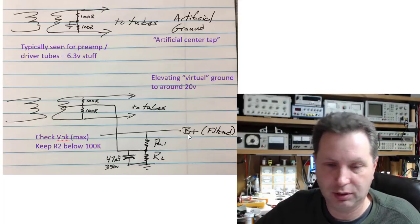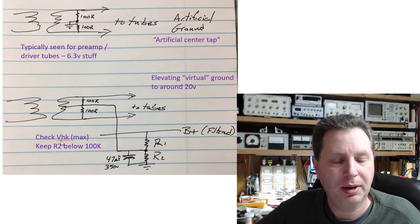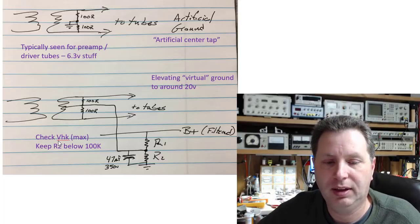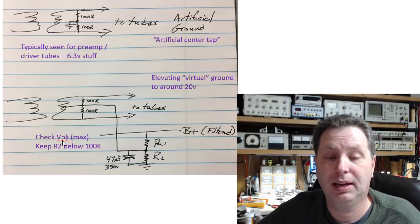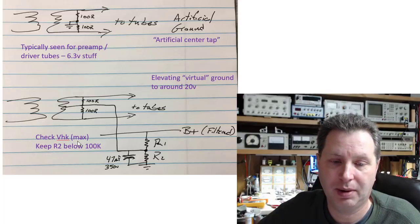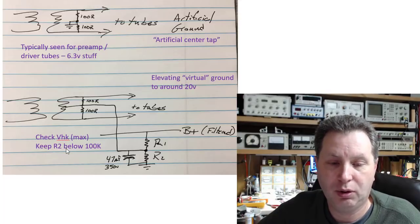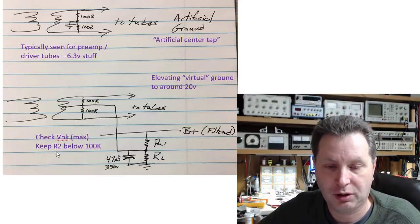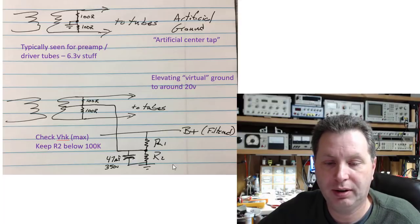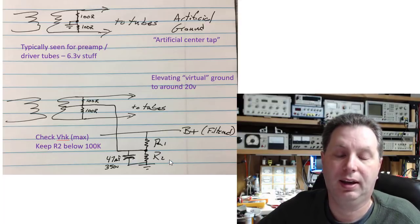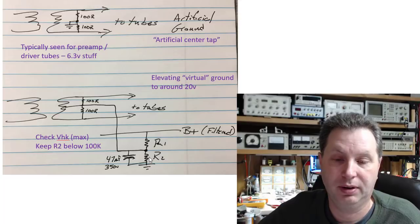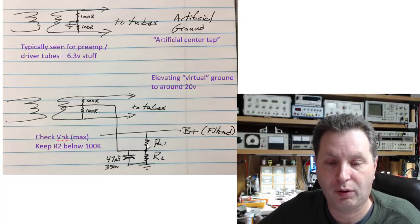One thing you want to pay attention to and look up: the tubes you're feeding, make sure you don't violate VHK, which is heater to cathode voltage maximum. And the other thing you want to do, just to keep from drawing too much current here, is you want to keep R2 down here somewhere below 100k. If you start getting that number up, then you're starting to pull a good bit of current here.